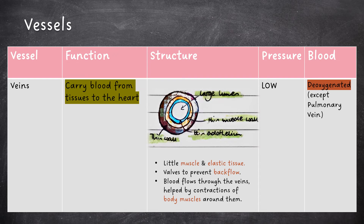Veins carry blood from tissues to the heart. Compared to arteries, veins have a larger lumen, a thinner muscle wall, a thinner endothelium and a thinner wall overall. There is little muscle and elastic tissue, and there are also valves which prevent backflow. Blood flow through veins is facilitated by the contraction of body muscles. Blood pressure in veins is low, and the blood is deoxygenated, apart from in the pulmonary vein, which carries oxygenated blood from the lungs to the heart.